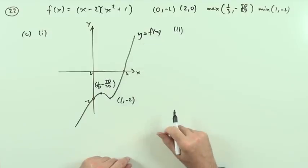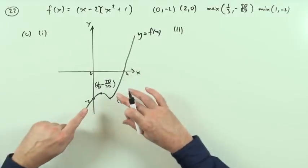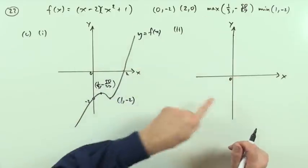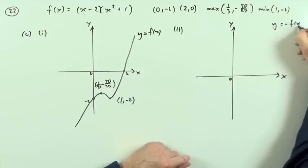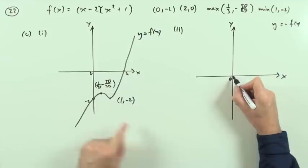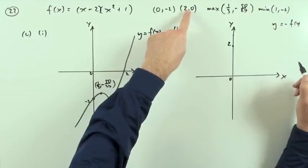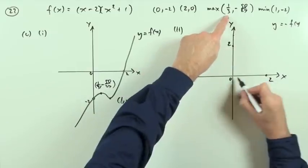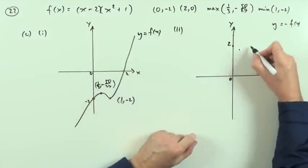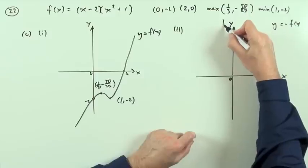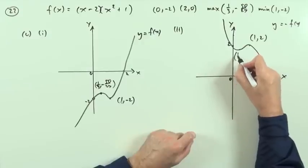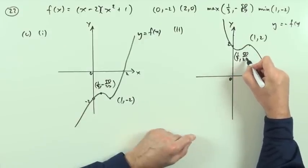For the second sketch — y equals negative f(x) — the whole graph just flips upside down. The x-intercepts stay where they are. The point (0, -2) becomes (0, 2). The maximum at (1/3, -50/27) becomes a minimum at (1/3, +50/27). The minimum at (1, -2) becomes a maximum at (1, 2). The curve now comes down, turns at the minimum, turns at the maximum, and continues downward.